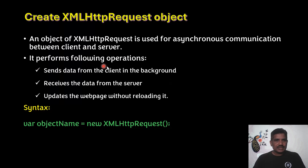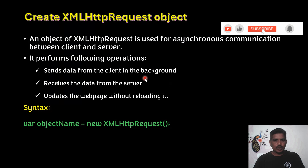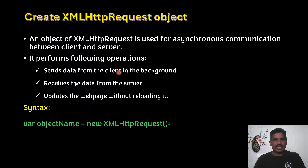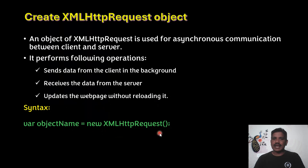The XMLHttpRequest object performs the following operations: it sends data from the client in the background, receives data from the server, and updates the web page without reloading it — only the modified part is updated. The syntax to create the XMLHttpRequest object is: var objectName = new XMLHttpRequest().